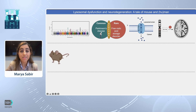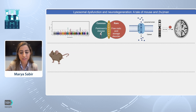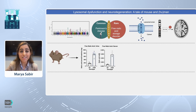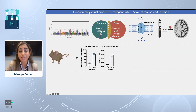We developed a mouse model carrying one of the most common mutations within the FSASD patient community. We next tested free sialic acid within the urine and serum, and we can see that in mutant mice it is elevated. This tells us that this is a bona fide model for FSASD.